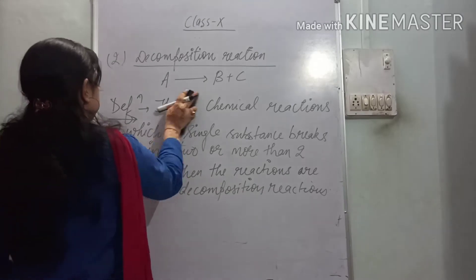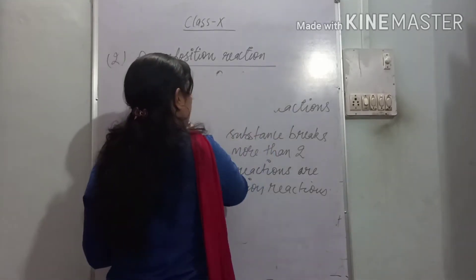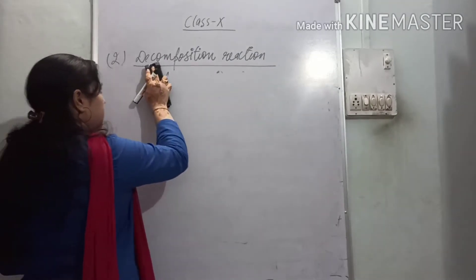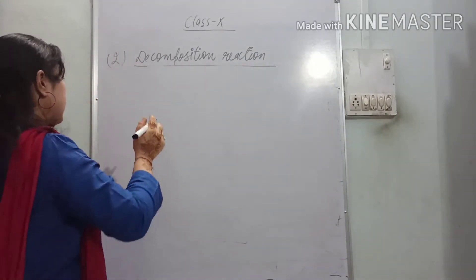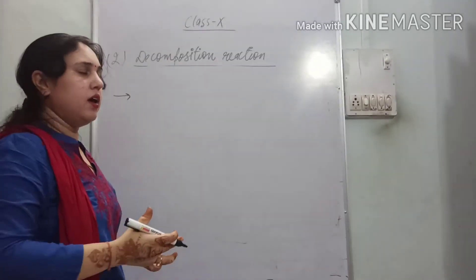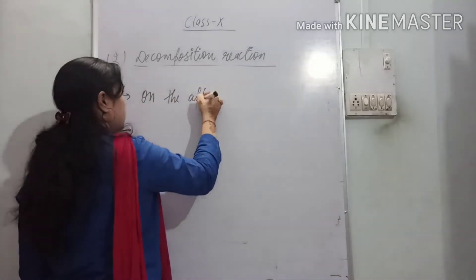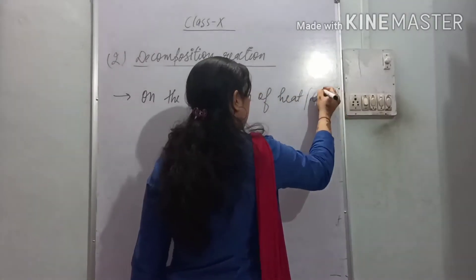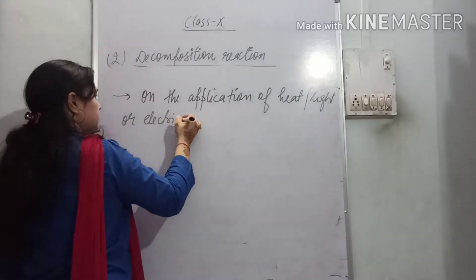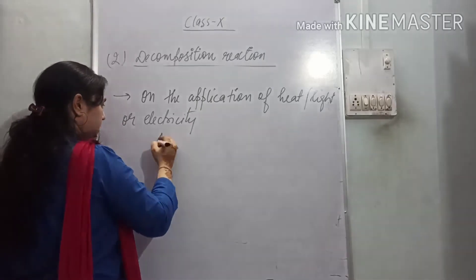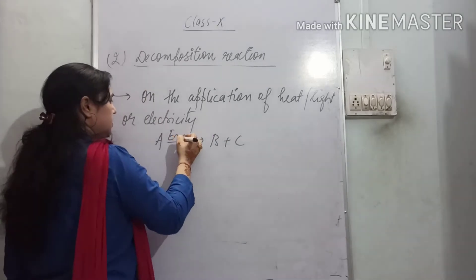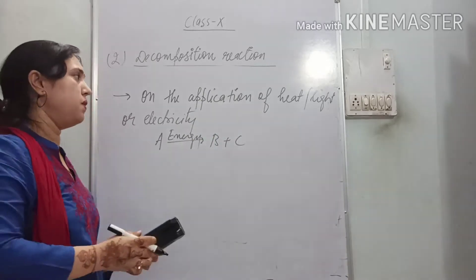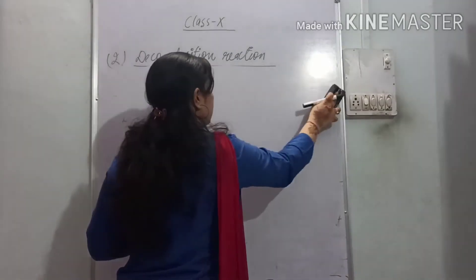Now let's take examples. Decomposition reactions also have types — there are three types of decomposition reactions. In the definition we wrote, we need to add one more point: decomposition is done on the application of heat, light, or electricity. That means the compound breaks down in the presence of energy, and we provide that energy whether in the form of heat, light, or electricity.